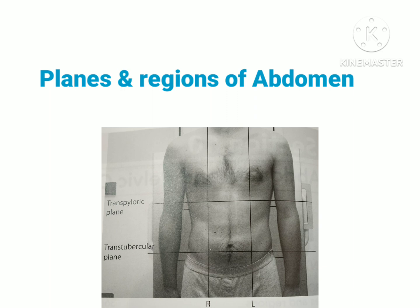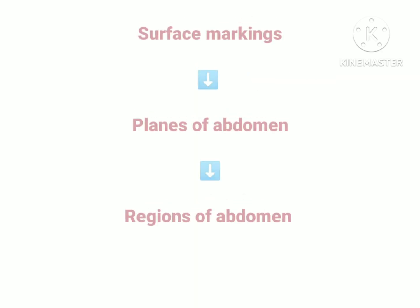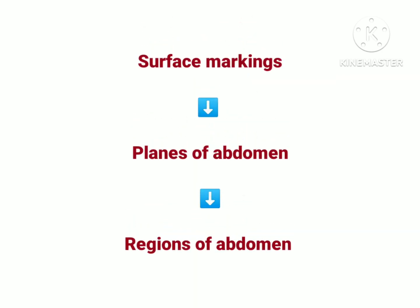When we know the planes and regions of abdomen, we can say that if we have a projection or view of x-ray abdomen, then we will know the organs present. And we will know the regions of abdomen when we know the planes of abdomen. And we will know the planes of abdomen when we know the surface marking.